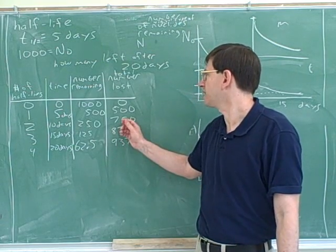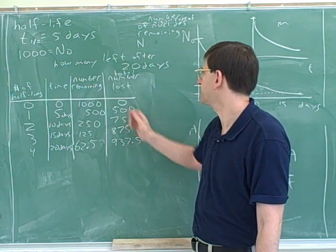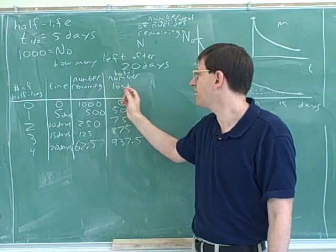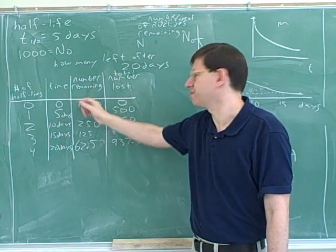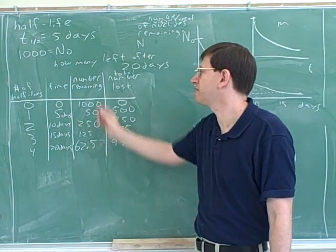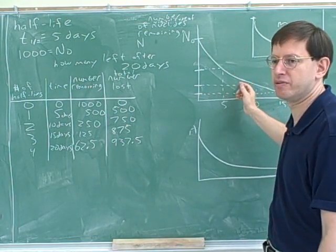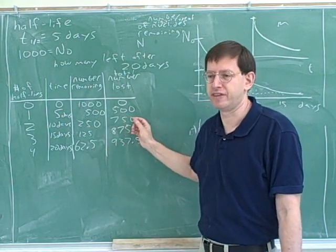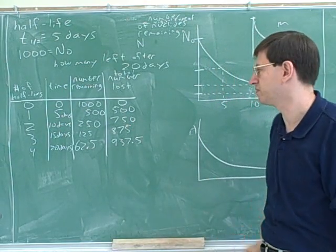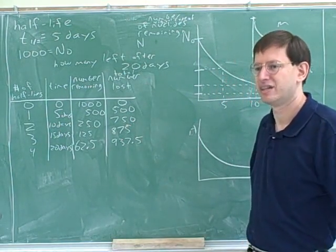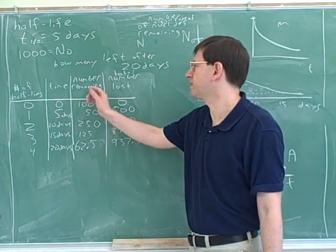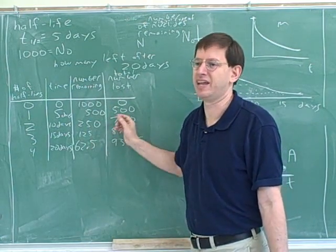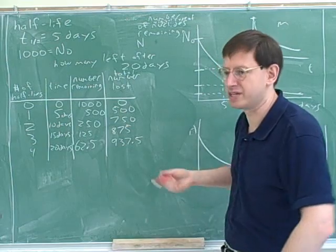You didn't need this column because I didn't ask how many were lost — I asked how many were left. But on the test, you might see a question asking how many are lost, so you need this extra column. Notice that this column comes last. You don't figure it out directly from the half-lives — the half-lives tell you directly about how many are remaining. Then you have to do extra work to figure out how many are lost. So if you see a half-life question, use these tables right away. Label one column 'number remaining' and one 'number lost.' First figure out the number remaining, then figure out the number lost. Pay attention to what the problem is asking.